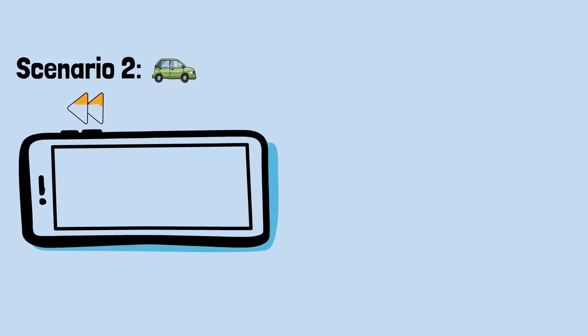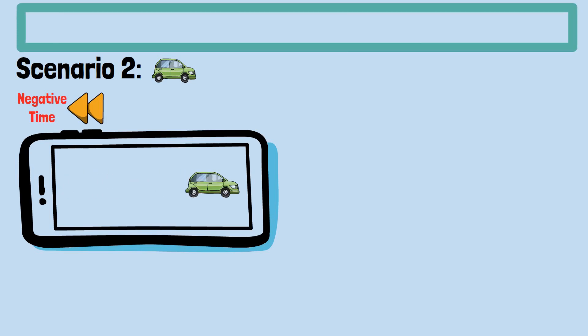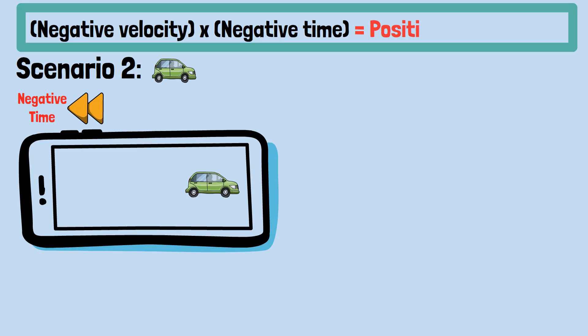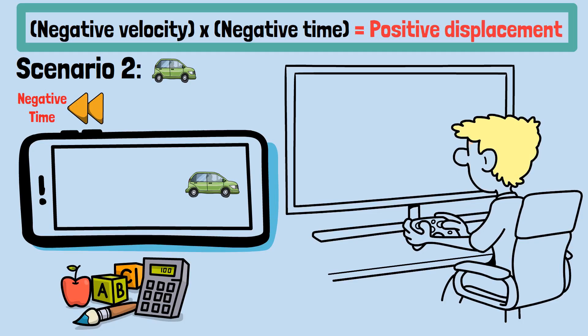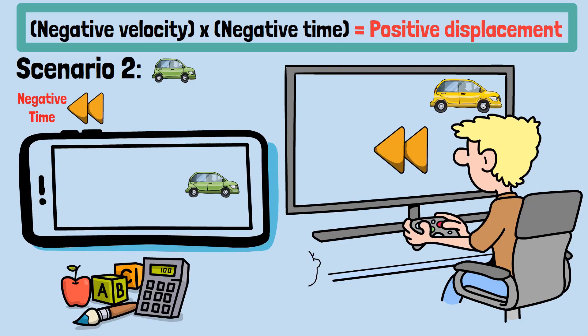Scenario 2. The same car is driving backward, negative velocity. But now, we play our footage in reverse, negative time. What do we see? The car appears to move forward on screen. Mathematical representation: negative velocity × negative time = positive displacement. This isn't just a mathematical curiosity. It represents something physically meaningful. When you reverse time, play footage backward, a car that was moving backward now appears to move forward. The double negation creates a positive result that we can literally see with our eyes.